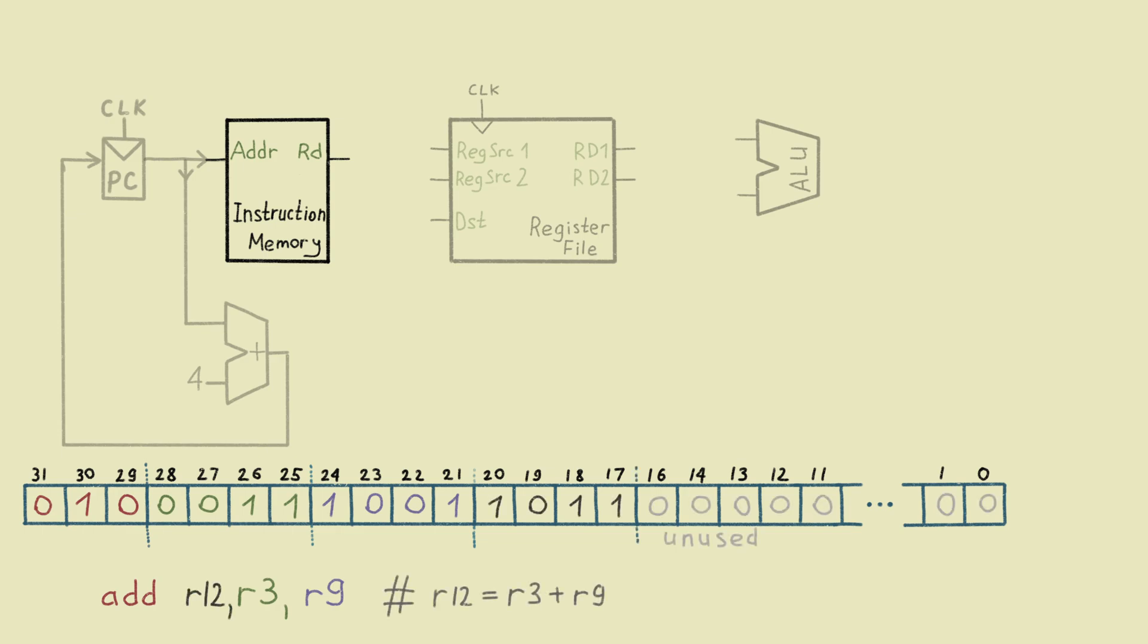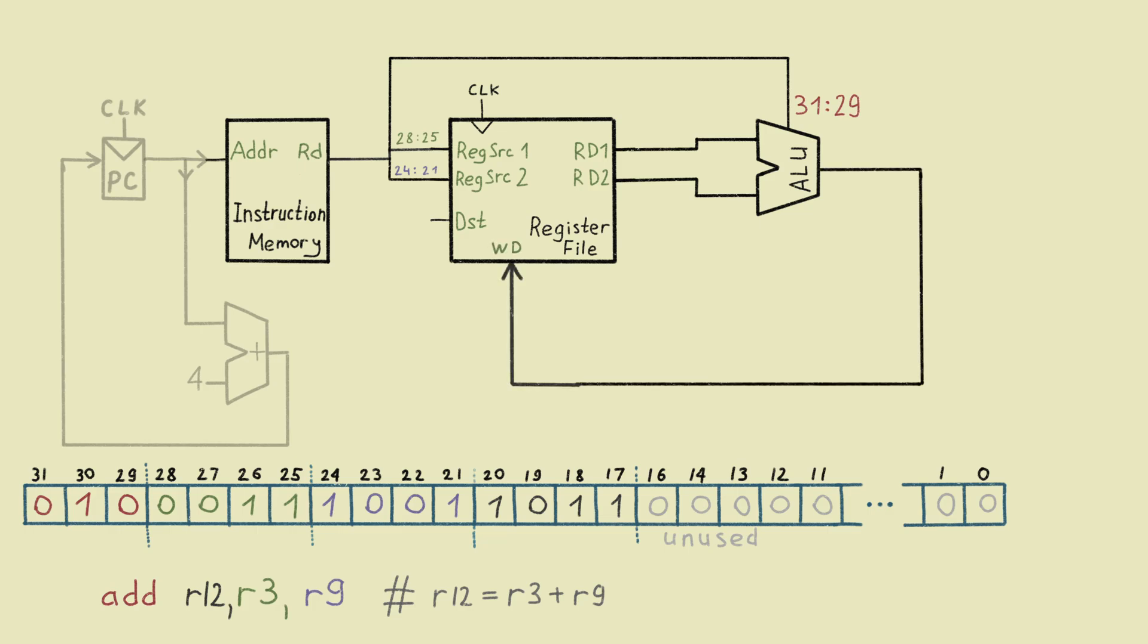Now we pass the register numbers of the first and the second argument to the register file. And we pass the operation code to the ALU. Register file is connected to ALU. ALU does the math and sends the result back to write it to the destination register. The only thing we forgot is to inform the register file about the number of the destination register. Done. We managed to build something that looks like a processor.